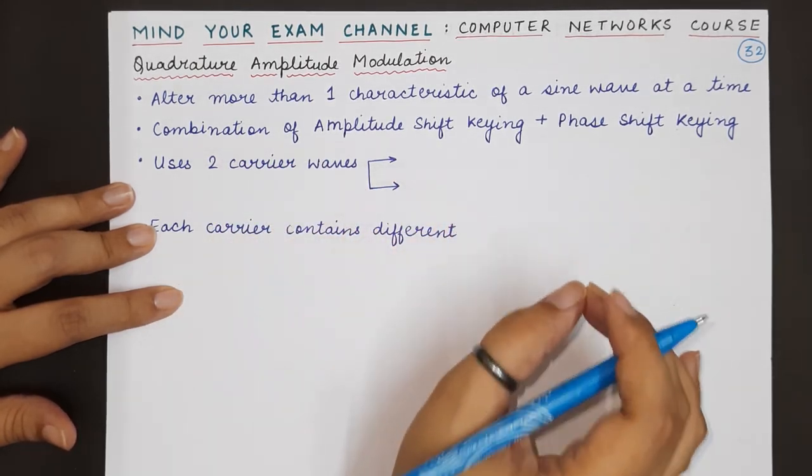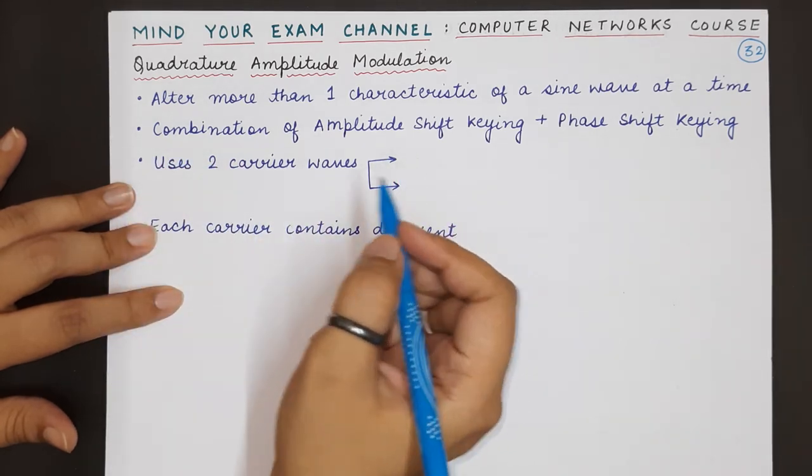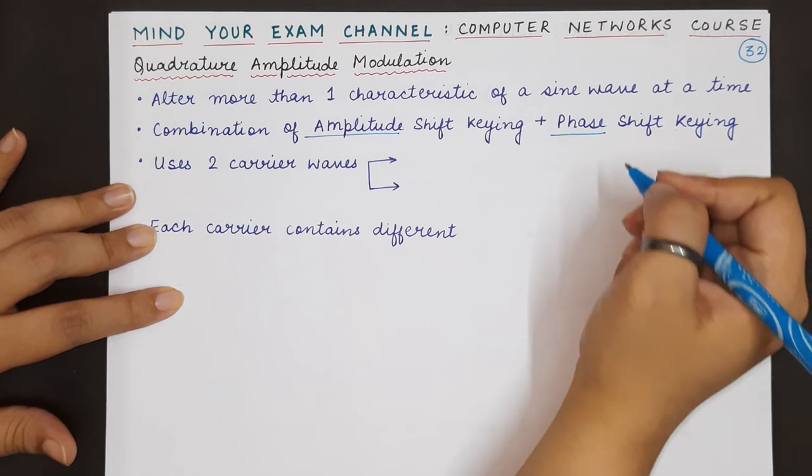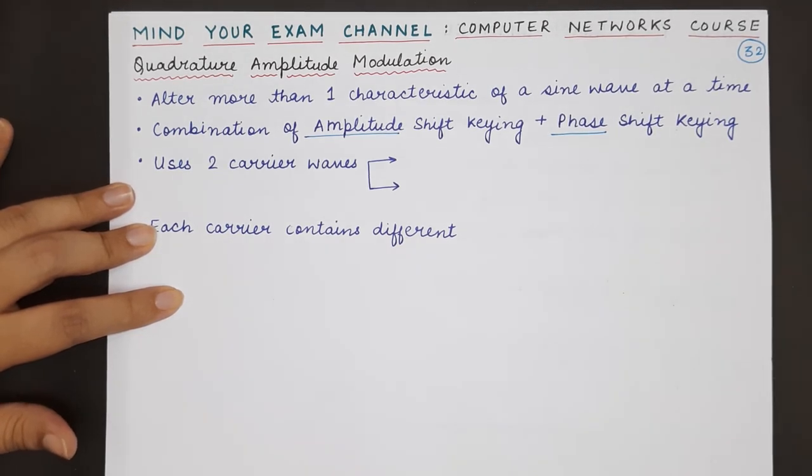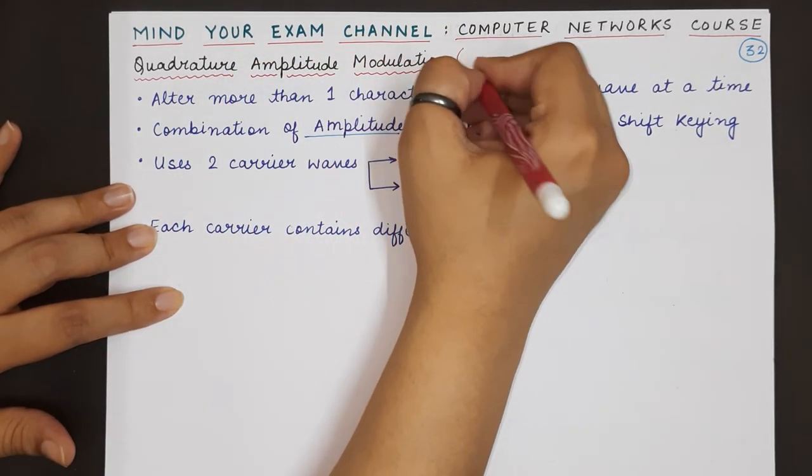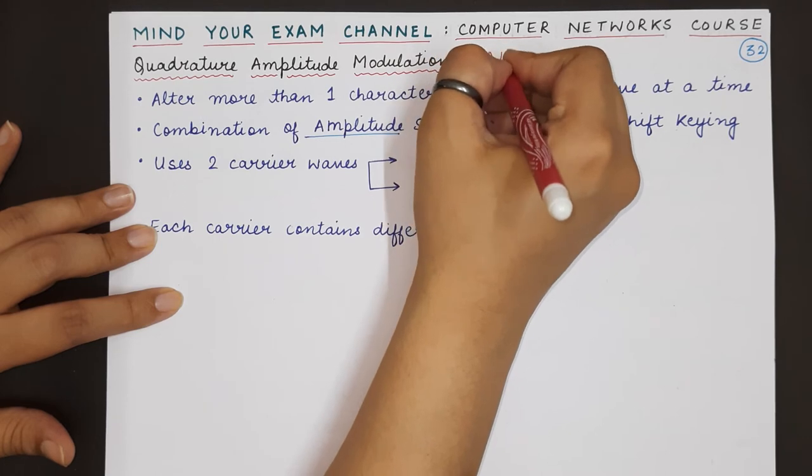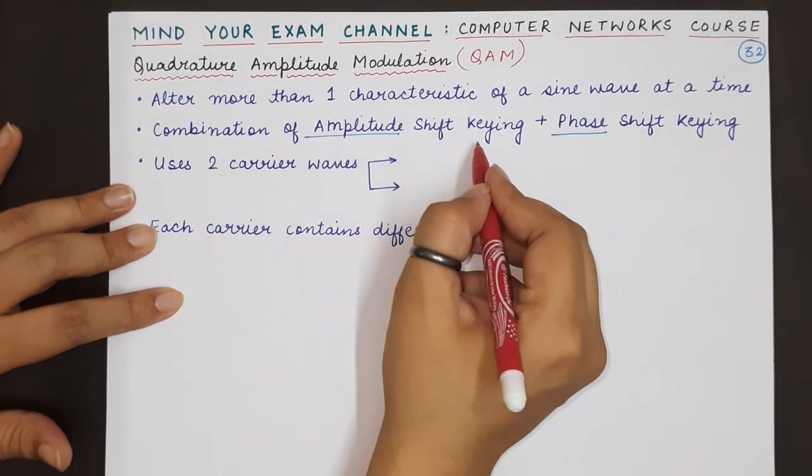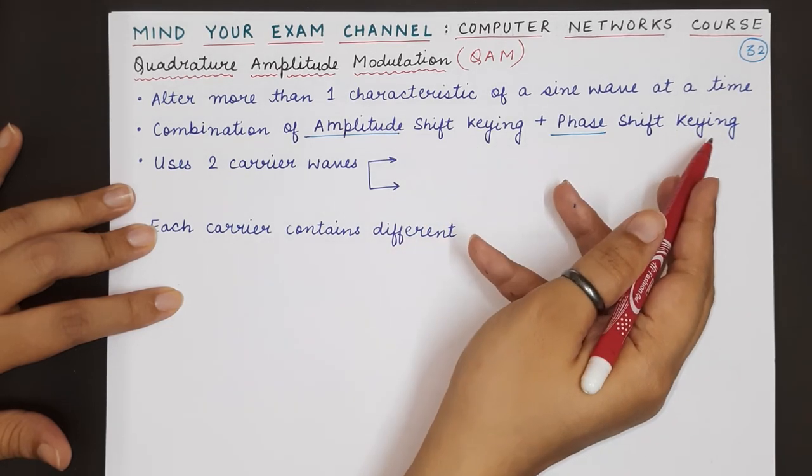What are the two characteristics? First is the amplitude and the second is the phase. Basically, quadrature amplitude modulation also known as QAM is a combination of ASK and PSK.